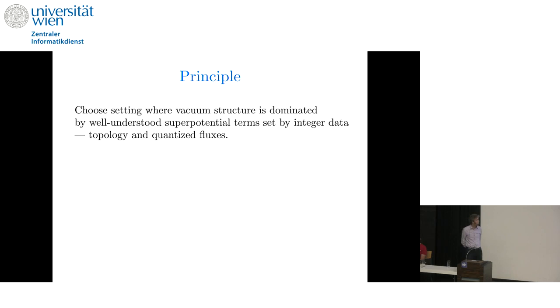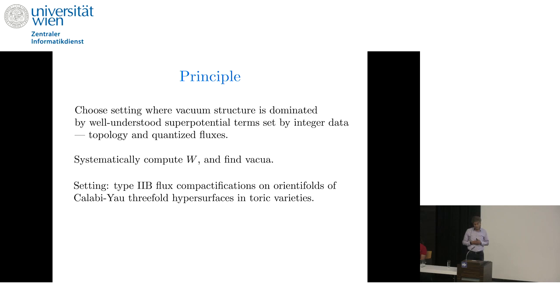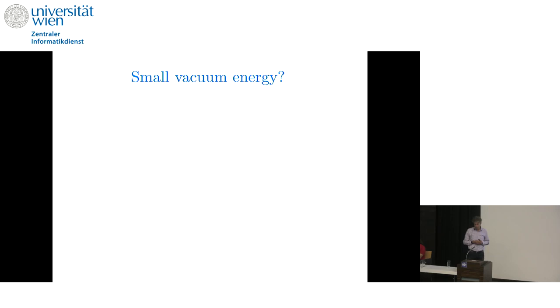So specifically, we're going to choose a setting where the vacuum structure is dominated by well-understood superpotential terms that are set by integer data, namely by topology and quantized fluxes. There we're going to systematically compute the superpotential and find vacua. The specific setting I have in mind is Type 2B flux compactifications on Calabi-Yau orientifolds that are hypersurfaces in toric varieties. There we will compute the superpotential by exploiting toric structures and by using some purpose-built software.